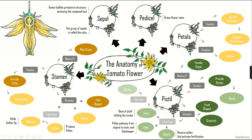To summarize: the two reproductive organs are the stamen, the male organ providing pollen for fertilization, and the pistil, the female organ holding the ovules to be fertilized and then develop into a tomato with seeds — allowing the creation of new plants, since inside each seed there is a tomato embryo that will become a full tomato plant when it germinates. The non-reproductive structures are the sepals forming the calyx protecting the flower before it opens, the pedicel holding the flower to the plant, and the petals attracting pollinators.